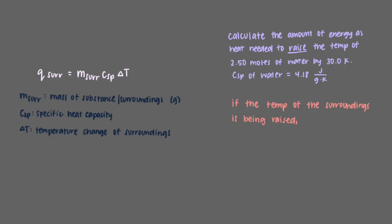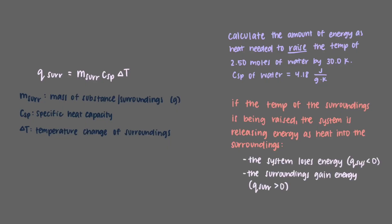If the temperature of the surroundings is being raised, that means that the system is releasing energy as heat into the surroundings. So the system is losing energy, and so q of the system is negative, and the surroundings are gaining this energy as heat, and so q of the surroundings is positive.